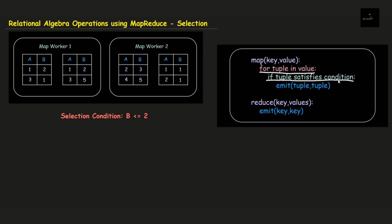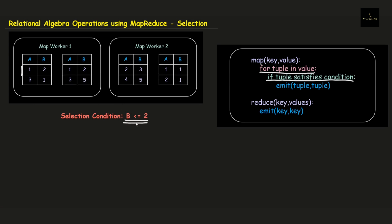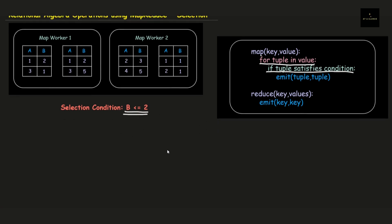If you look at the algorithm, the first step is to iterate over all the values and then check the condition. In this case, the condition is that the value associated under column B has to be strictly less than or equal to 2. So if we check the first record, it contains values 1 and 2, and the value under attribute B is 2 — it satisfies the condition, hence it can be selected. But the tuple 3 and 5 won't be selected because it does not satisfy the condition.